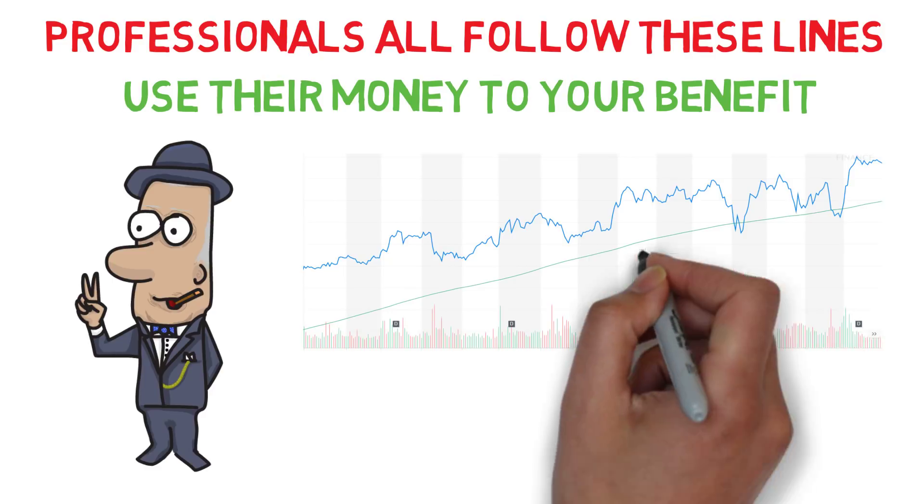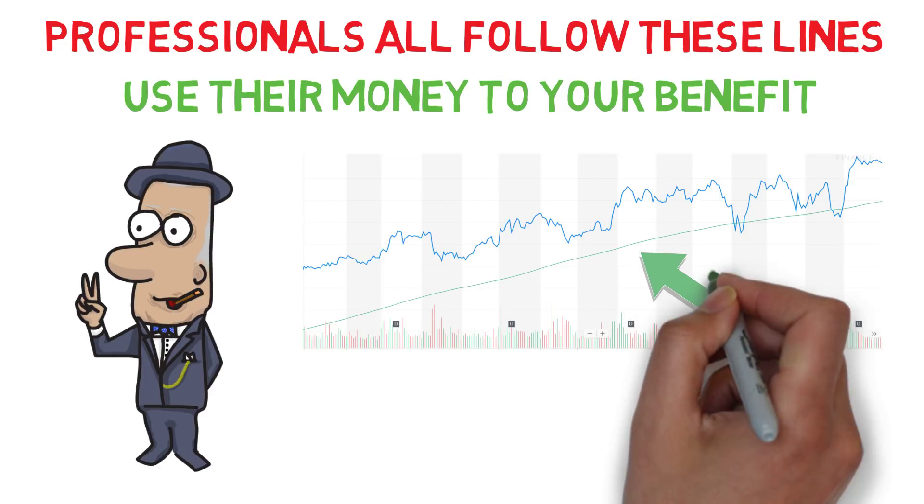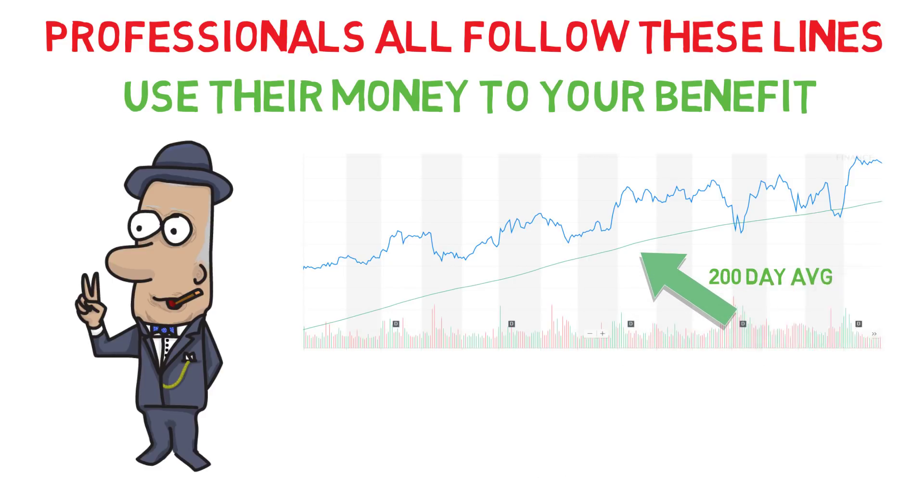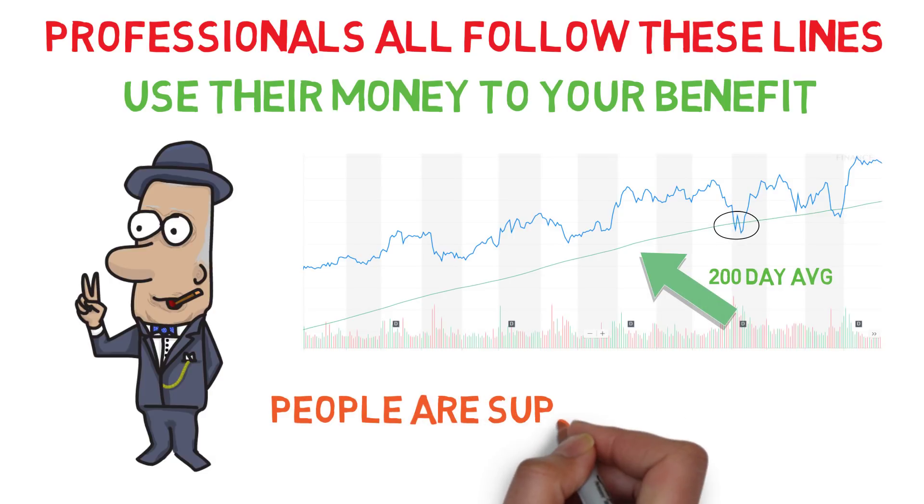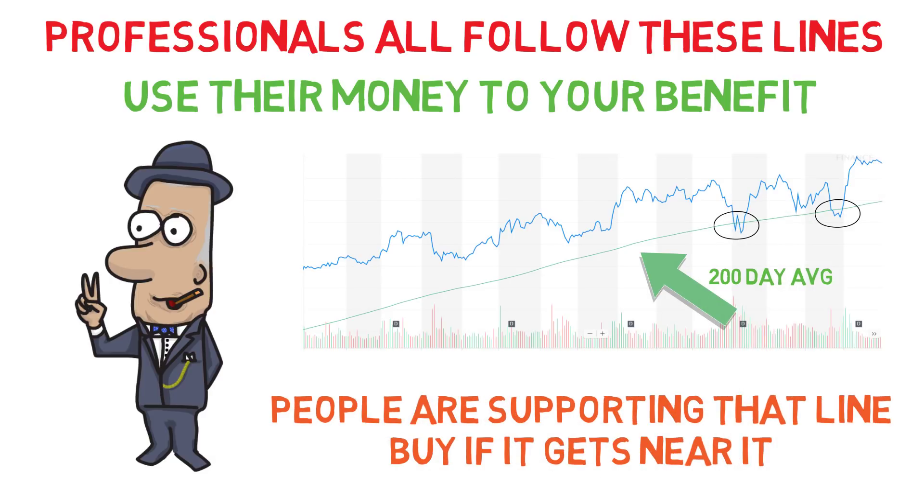For example, traders looking at Apple stocks might see this 200-day moving average line as an important line, so important that many people will buy if it gets near it, so the stock stays healthy. Going below this long-term average is not a good sign.